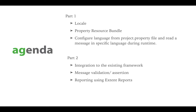As an automation engineer, our task is to create a configurable module that can test these translations without many changes to existing Selenium scripts. In this tutorial we'll see how to achieve this using simple methods provided by the Properties class. Part 1 covers understanding locales, using Property Resource Bundle, and configuring languages from the project property file. Part 2 covers optimizing, integrating into the existing framework, message validation and assertion, and reporting using Extent Reports.